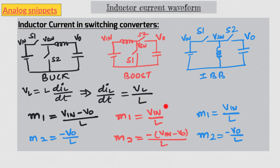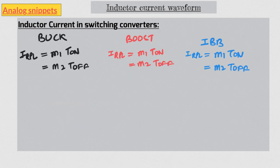Once we have the slope equations it's easy to calculate the ripple. It is simply slope multiplied by time. Since we have two slope equations, we can have two equations for ripple as well. Ripple can be calculated either by multiplying m1 by T-on or multiplying m2 by T-off. In steady state these two values must be equal. In CCM operation there are only two phases, T-on and T-off, so we can use these ripple equations to derive the input-output transfer function.